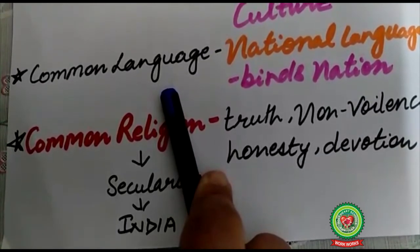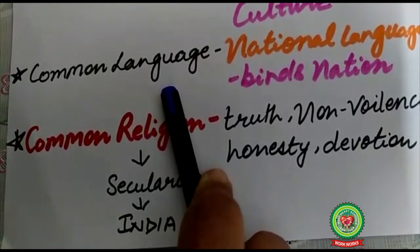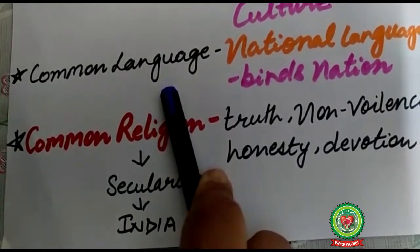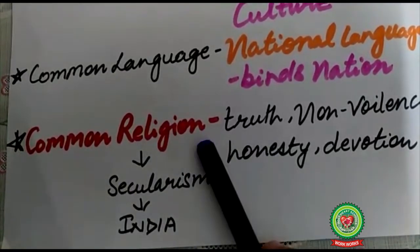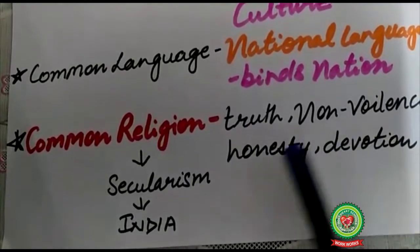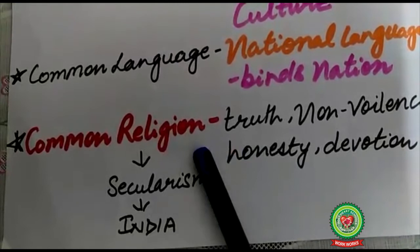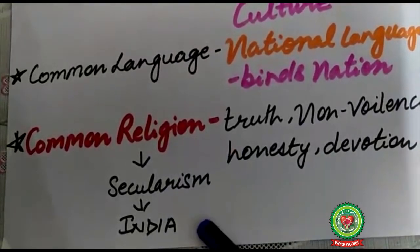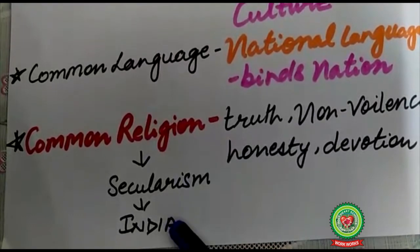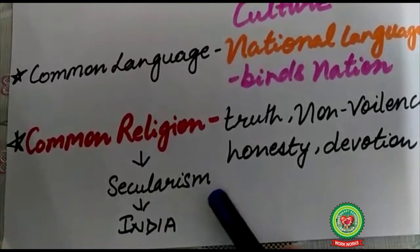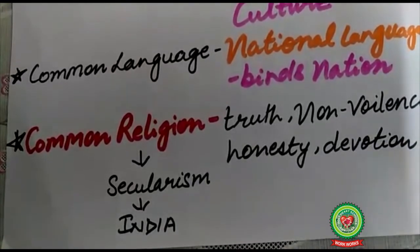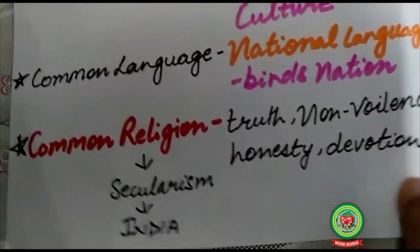The next factor that helps in the evolution of nationality is common religion. Common religion is a source of development of religious unity, which acts as a factor of nationality. We all have religious ties, and religion teaches truth, non-violence, honesty, and devotion. However, India is a secular state — we don't have any single national religion. We live on the ties of truth, non-violence, honesty, and devotion.